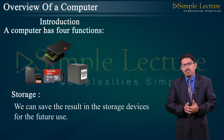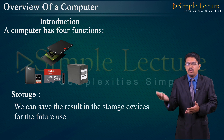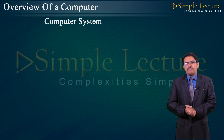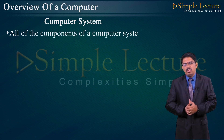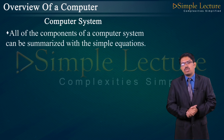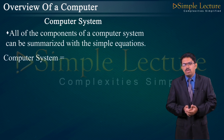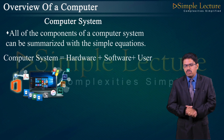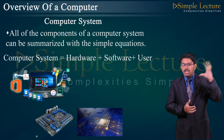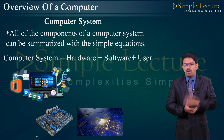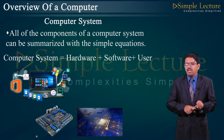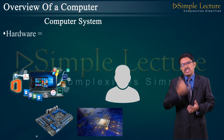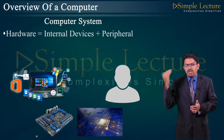All the components of a computer system can be summarized with a simple equation: Computer System = Hardware + Software + User. Software is a collection of programs. Hardware refers to the physical or internal components present in the computer. Hardware = Internal Devices + Peripheral Devices.